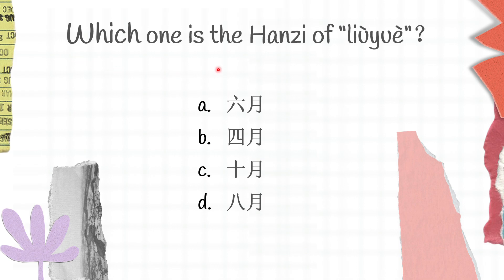The next one: which one is the Hanzi of 'liù yuè'? You can try to recall first. A is liù yuè, B is sì yuè, C is shí yuè, and D is bā yuè. The correct answer for this question is A.